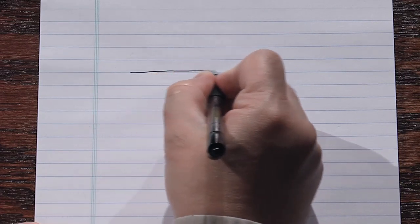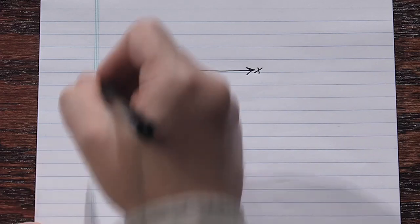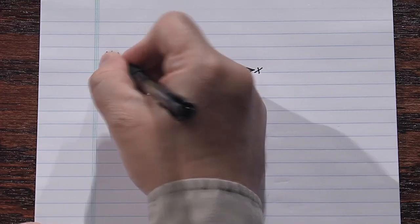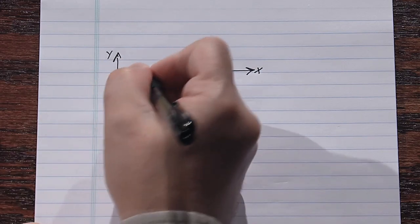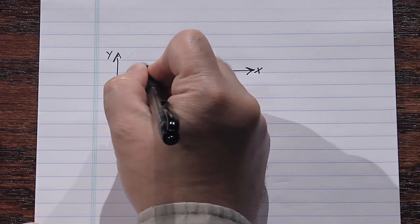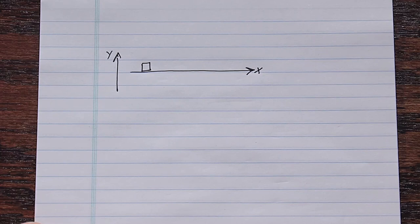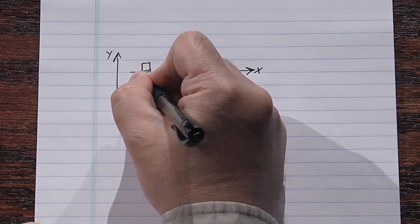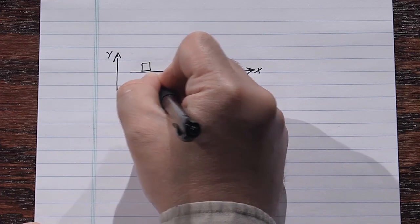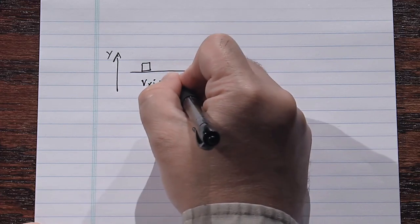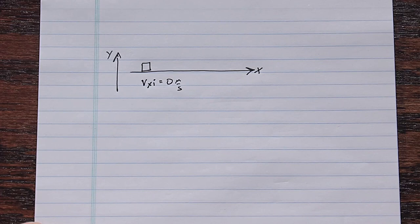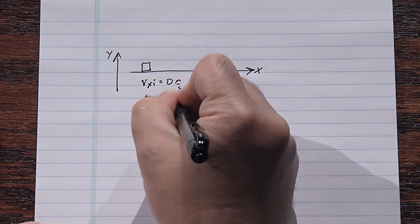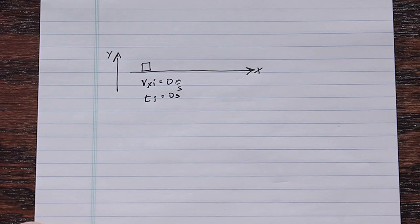First step, as always: draw a diagram. We draw our x-axis — the antelope moves along x, y is vertical but we won't need it. The antelope starts from rest, so vx_initial equals zero meters per second. We can choose to start our stopwatch at zero, so t_initial equals zero seconds. That's our initial situation.